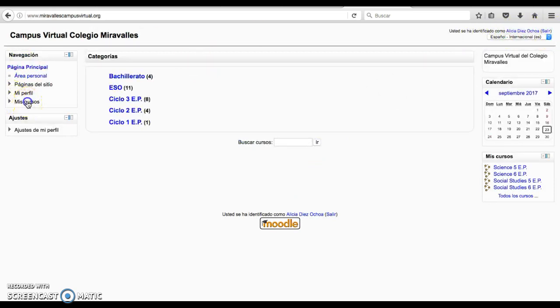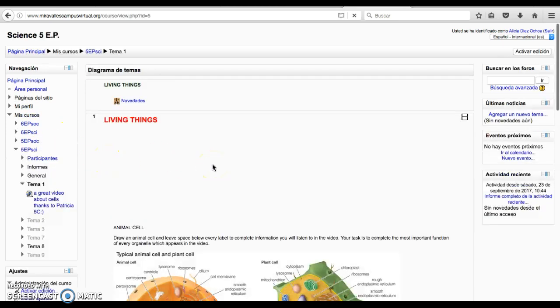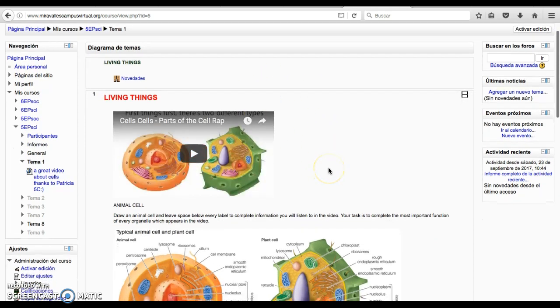Then if you go to Miss Cursos and in this case you should click on Science 5 or 6 if you're a sixth grader, and you will see this screen.